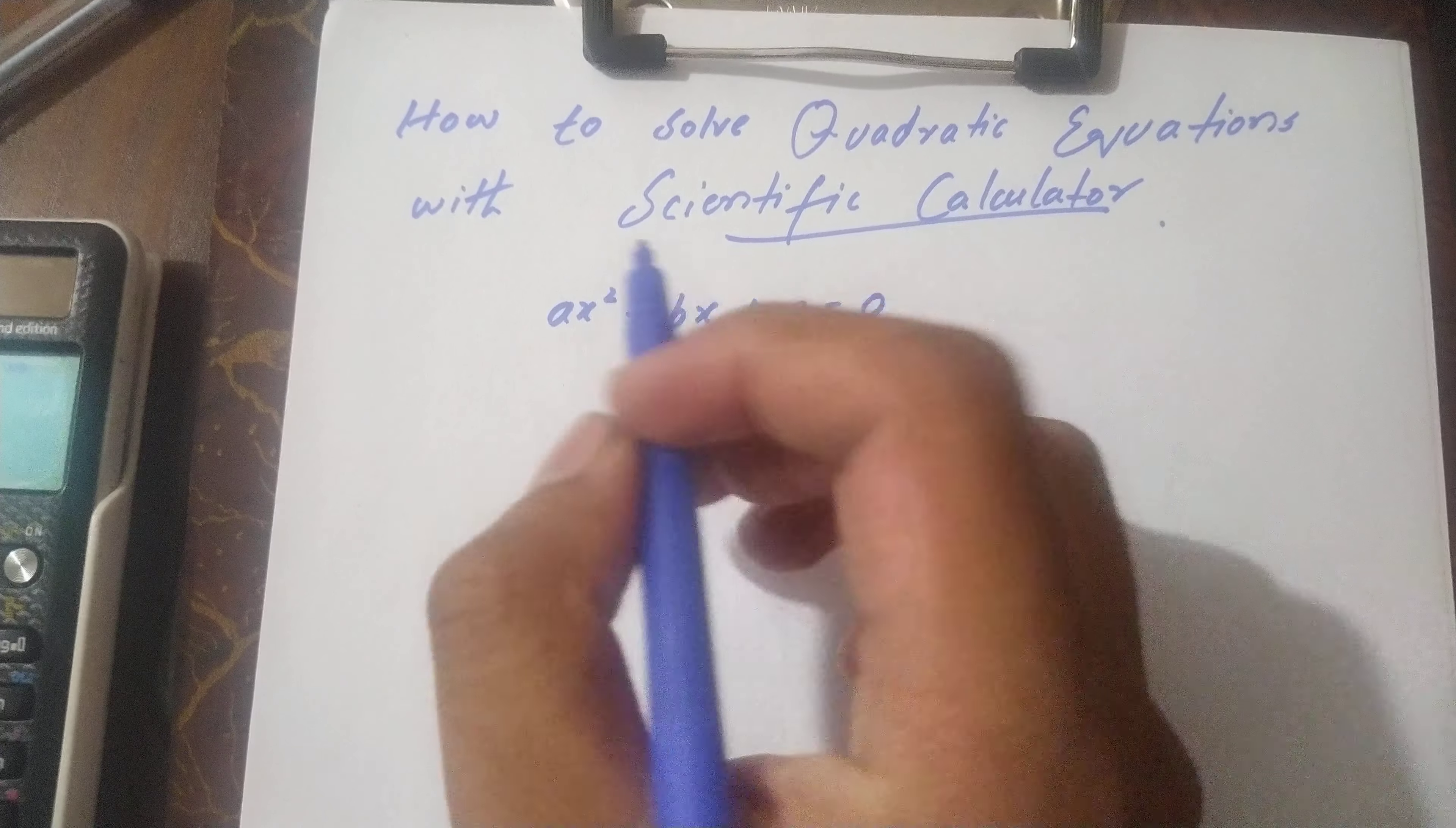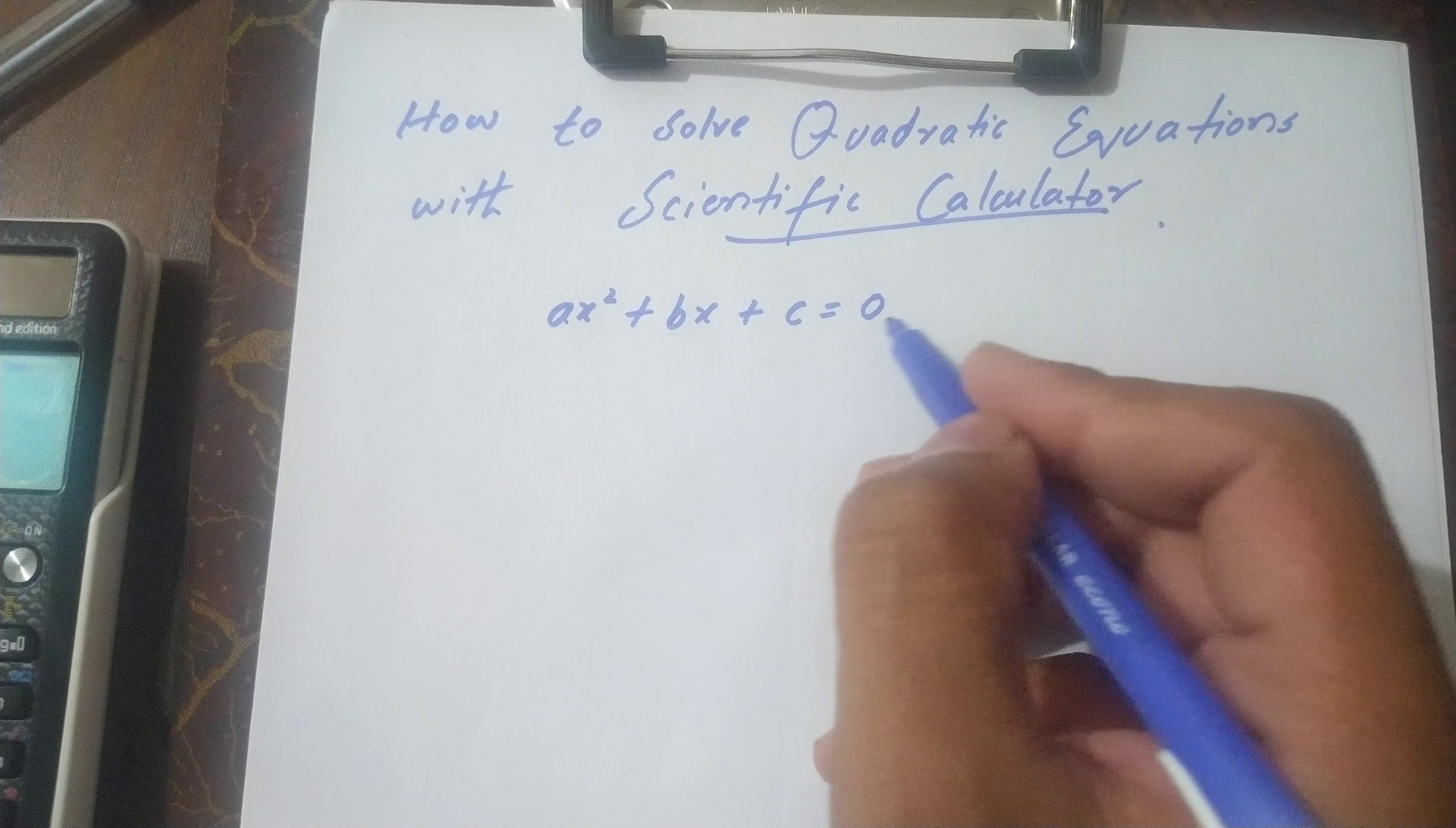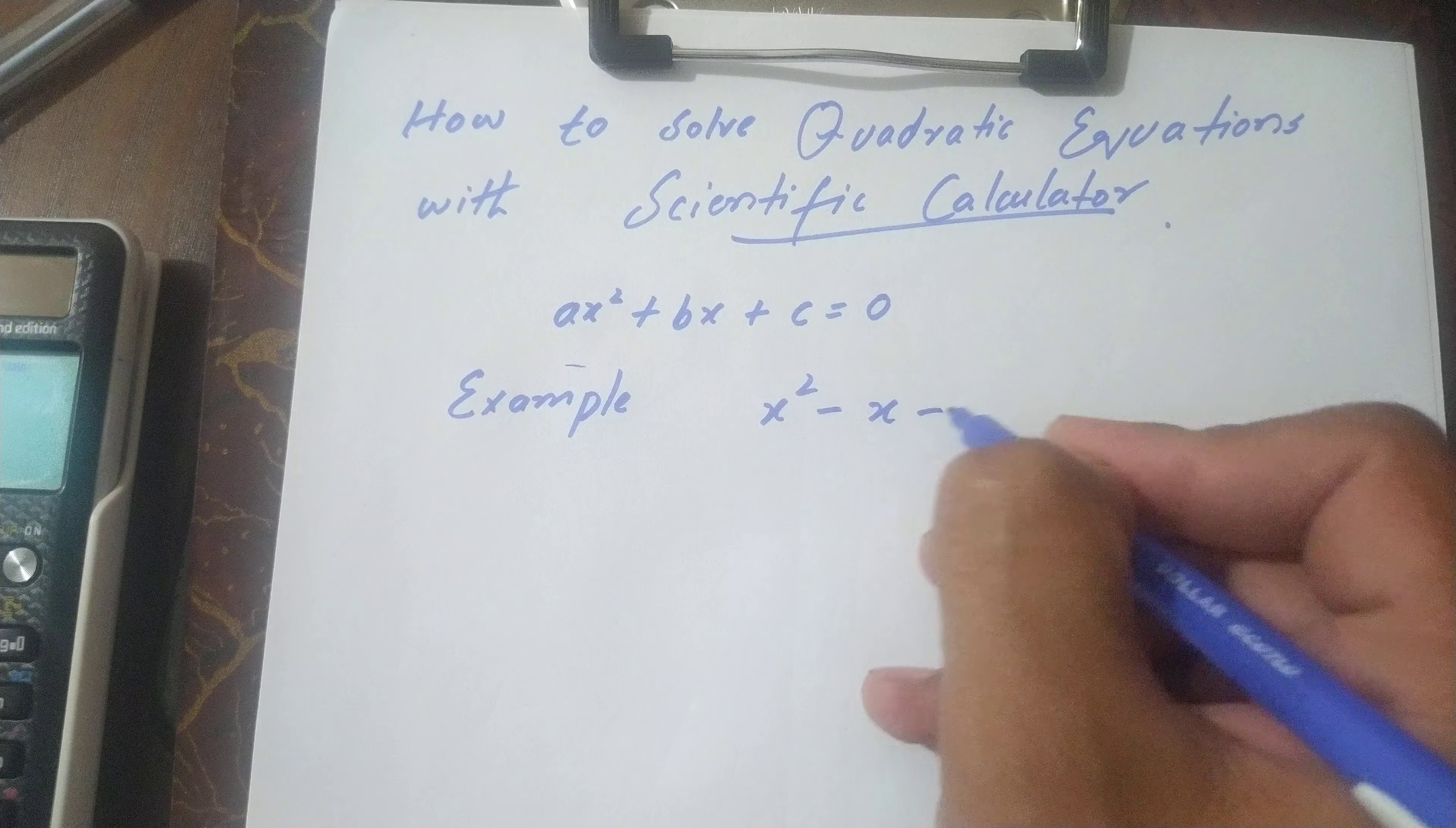How to solve quadratic equations with scientific calculator. A quadratic equation is ax² + bx + c = 0. If we take this example, it can be x² - x - 20 = 0.